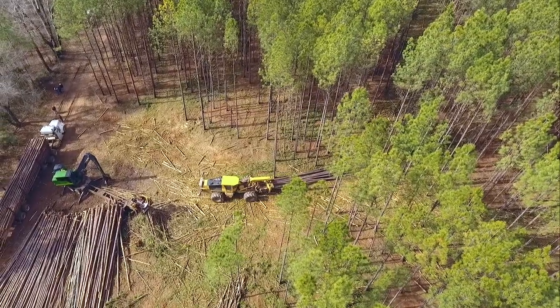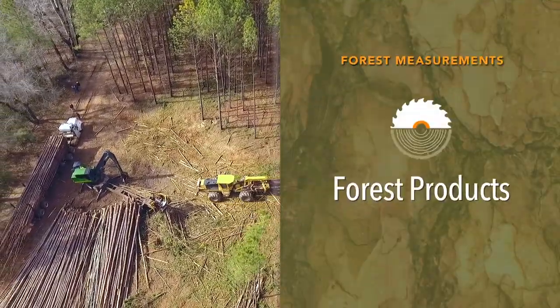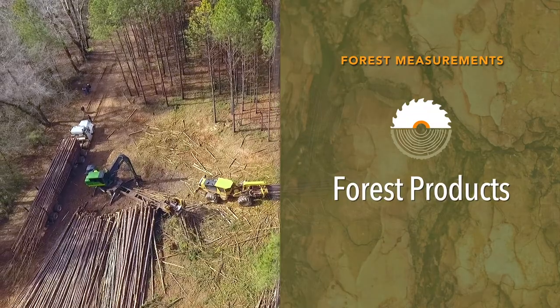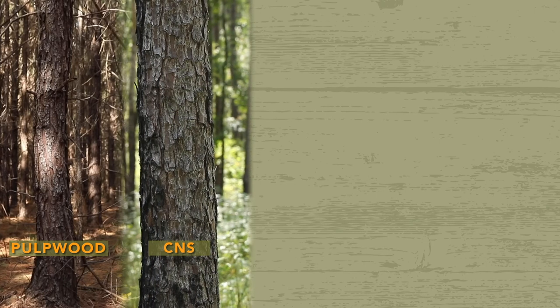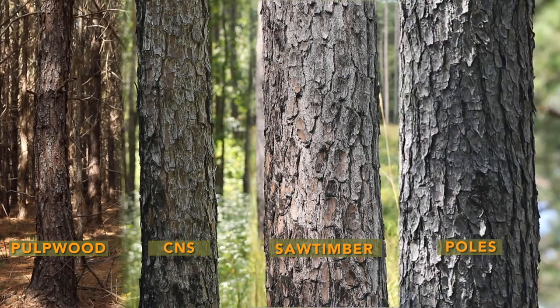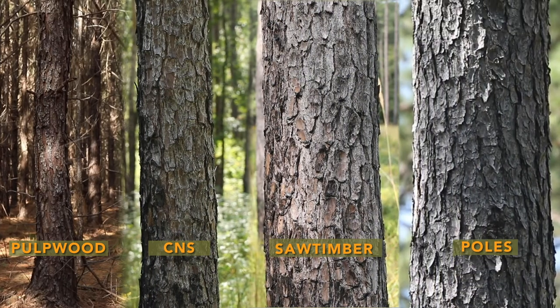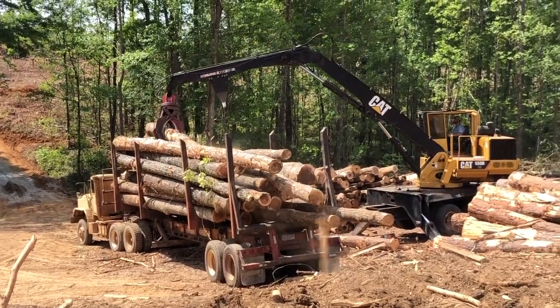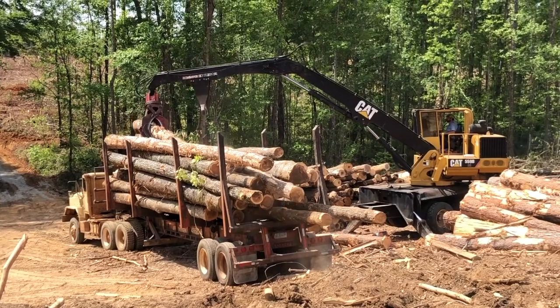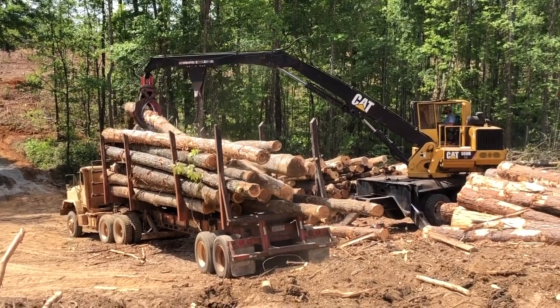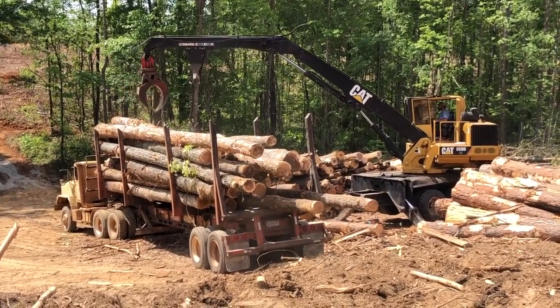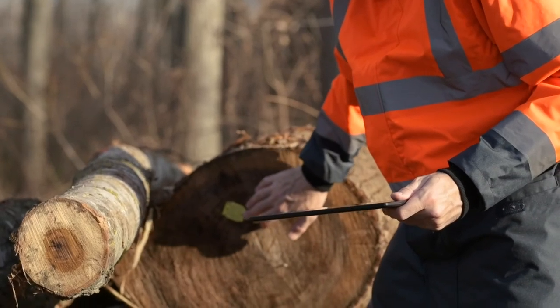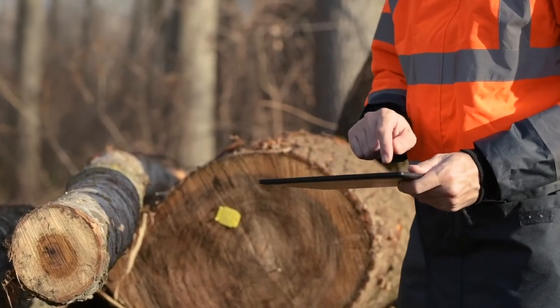There are four commonly used classifications of softwood and hardwood timber products, and each brings a different price to the seller. Pulpwood often has the lowest dollar value, followed by chippensaw, saw timber, and then poles. It is important to understand the difference in these terms and the effect they have on selling one's timber. Specifications can change based on tree species, log quality, and mill specifications. Verify local market specifications with your Forester.